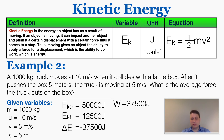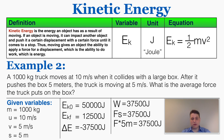The other object experiences 37,500 joules of work, which equals the force it experiences times the displacement. The displacement is 5 meters, so the average force the object experiences as the truck slows down is 7,500 newtons. That's the connection between kinetic energy and work.